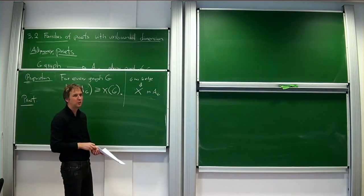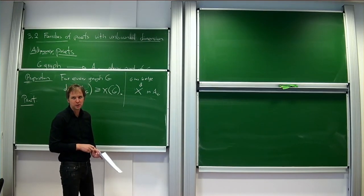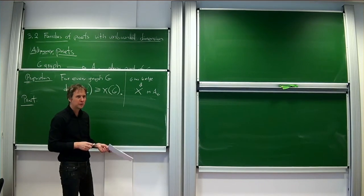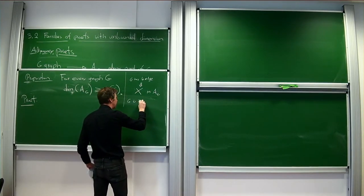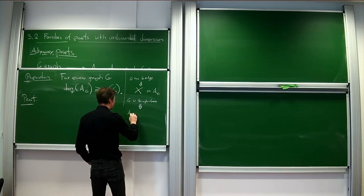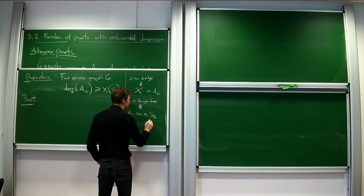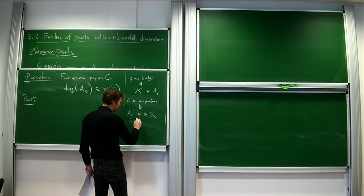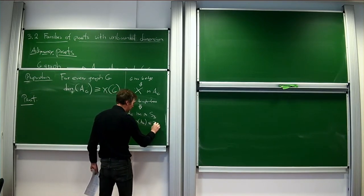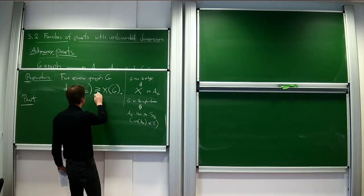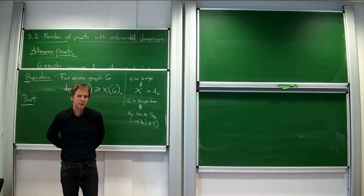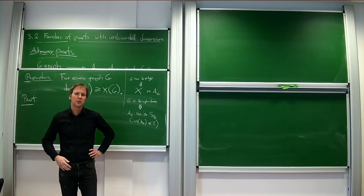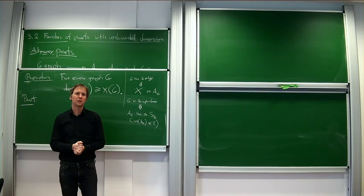If we take a graph that has no triangle — no clique of size three — then we will never see a standard example of size three. So if G is triangle-free, then AG has no S_3. In other words, the standard example number of AG is at most two. Together with this proposition and the well-known fact that there are triangle-free graphs with arbitrarily large chromatic number, we get a family of posets with no large standard examples and arbitrarily large dimension.